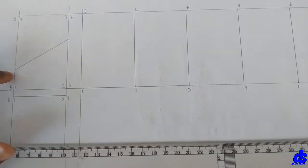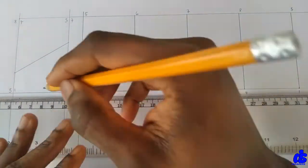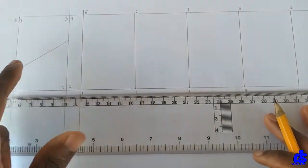Alright, so we have introduced the cutting plane here. Now we are going to draw horizontal lines from these two sides.